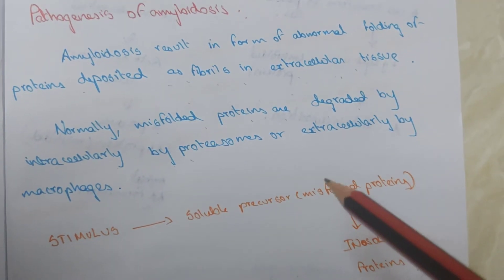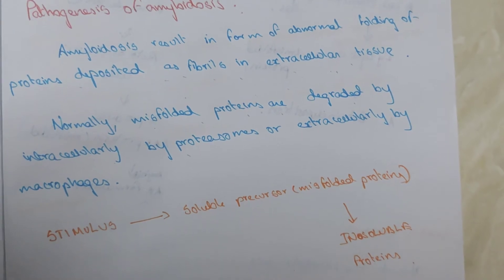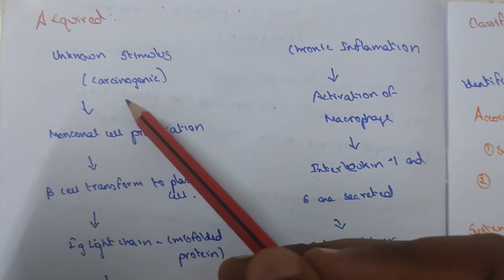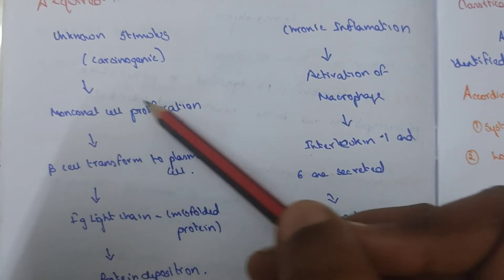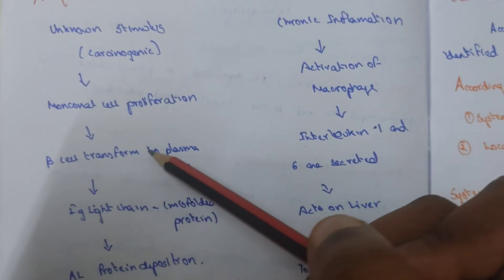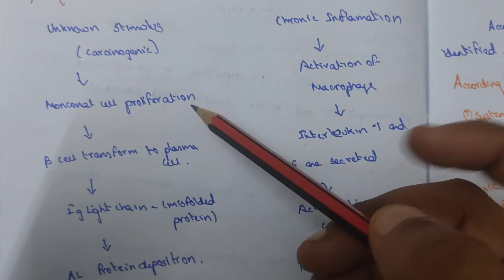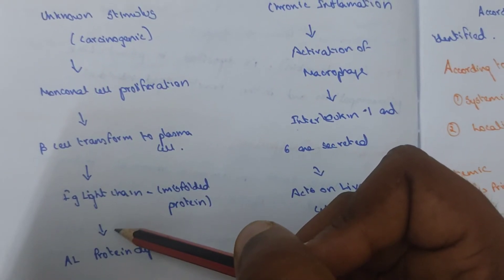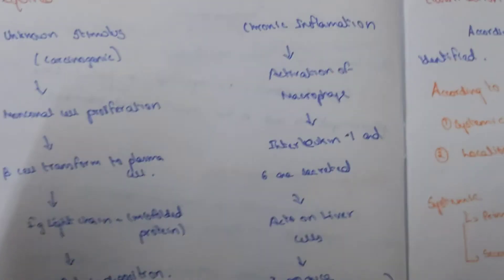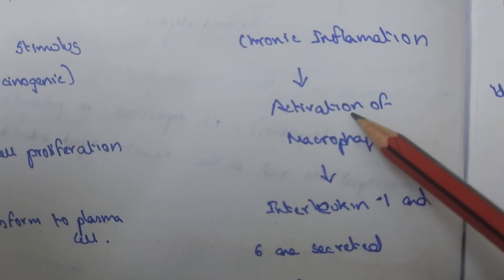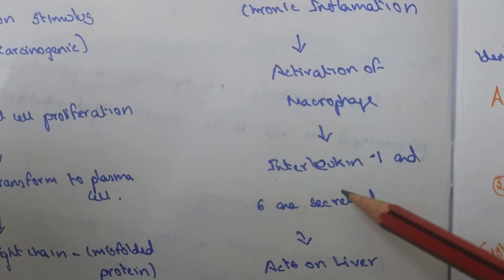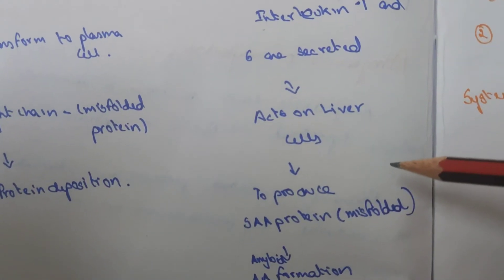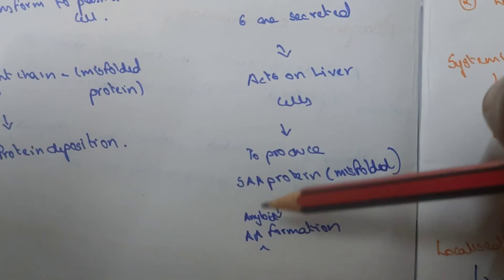Pathogenesis can be divided into acquired and genetic. In acquired: an unknown stimulus, such as carcinogenic, stimulates proliferation of monoclonal cells, which stimulates B cells to transform into plasma cells, resulting in formation of immunoglobulin light chain — a misfolded protein — leading to AL protein deposition. In chronic inflammation, macrophage activation causes secretion of interleukin-1 and interleukin-6, which act on the liver to produce a protein that is a misfolded protein transformed into AA amyloid formation.